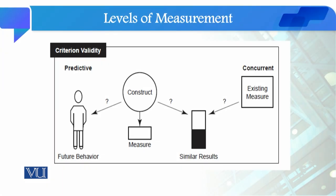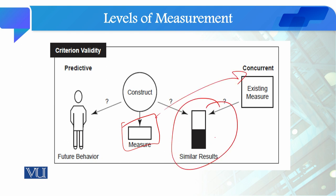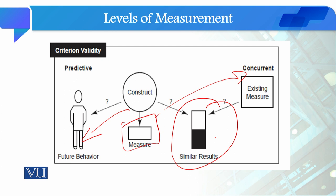So to summarize: we have a construct and a measure. If we compare it with an existing measure and the results are similar, we say concurrent validity is high. If a measure predicts future behavior — for example, social media addiction predicting depression, anxiety, and stress — then we have predictive validity. In this module, we have seen what criterion validity is, and what predictive and concurrent validity are.